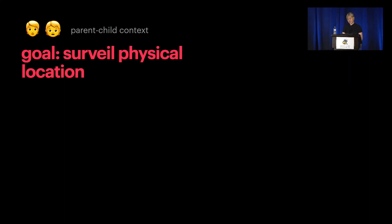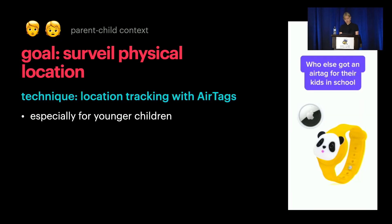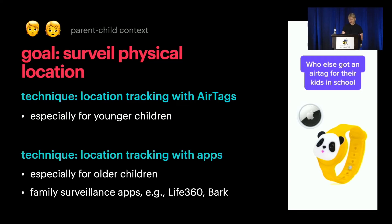In the parent-child context, many parents were interested in surveilling their children's location. One popular technique for younger children was to use AirTags—despite Apple condemning the use of AirTags for tracking people—by putting AirTags on a bracelet or hiding them in the soles of their children's shoes. For older children, some parents required their children to download family surveillance apps like Life360 or Bark. These apps can track location but also things like how fast they're driving, what they're texting on their phone, and their social media usage.